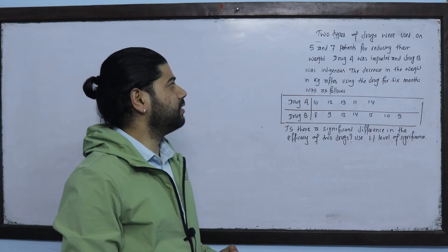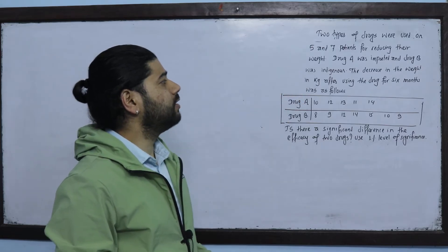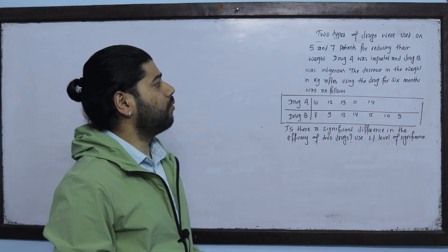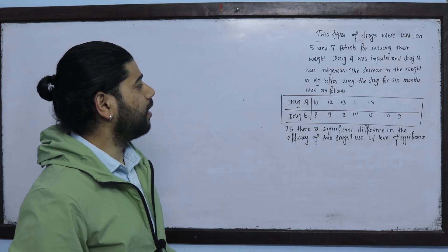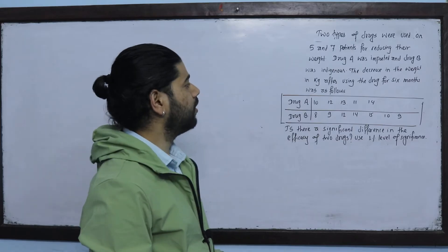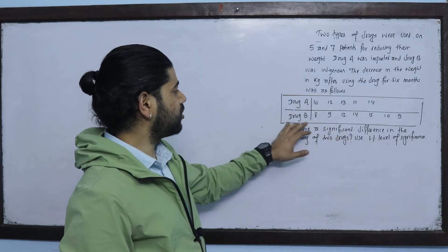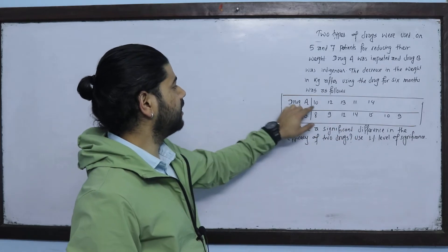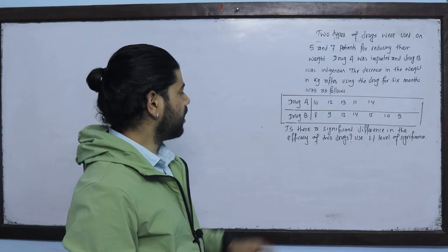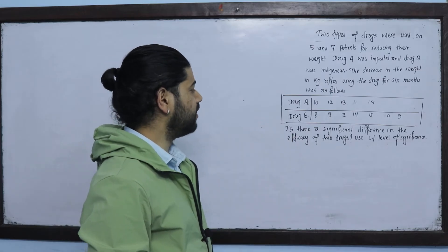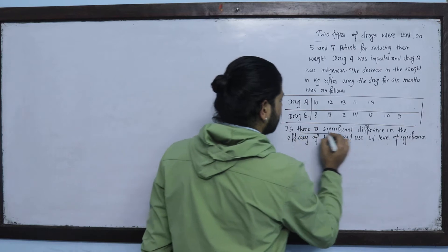We have a question about two types of drugs used on 5 and 7 patients for reducing their weight. Drug A was imported and Drug B was indigenous. The decrease in weight in kilograms after using the drugs for 6 months was recorded. We need to test at 1% level of significance whether there is a significant difference.